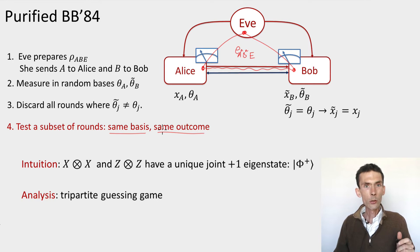And what was the intuition for this protocol being secure? It was that whatever state Eve prepares between Alice and Bob, this test that they're performing, checking that if the basis was the same, the outcome was the same, this is equivalent to projecting the state that Alice and Bob share into a simultaneous plus one eigenstate of the Pauli X tensor X operator and the Pauli Z tensor Z operator. And now it turns out that these two operators have a unique joint plus one eigenstate, which is the phi plus state, just the EPR pair.